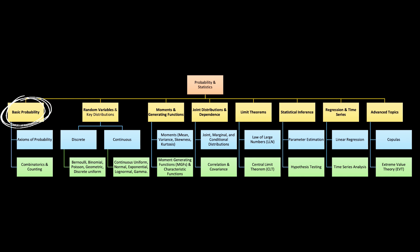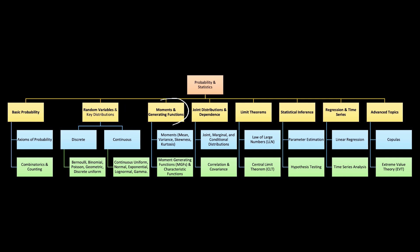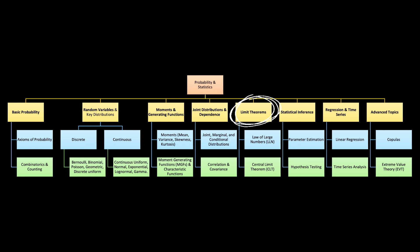Under probability and statistics, you'll first study basic probability concepts, which include axioms of probability, random variables, and key distributions divided into discrete and continuous. Then moment generating functions, which include mean, variance, and the third and fourth moments. Next, joint distributions, and limit theorems, which include the law of large numbers and the central limit theorem.